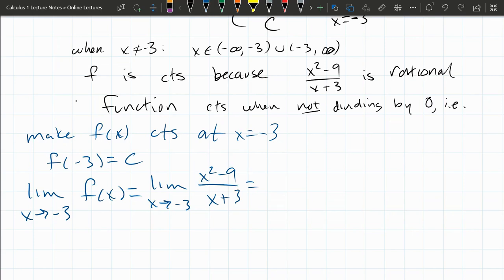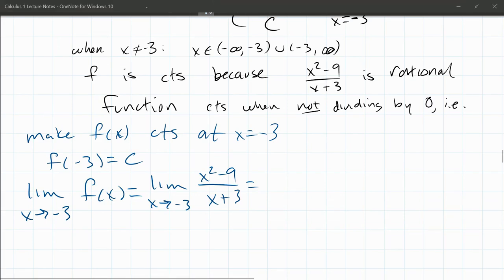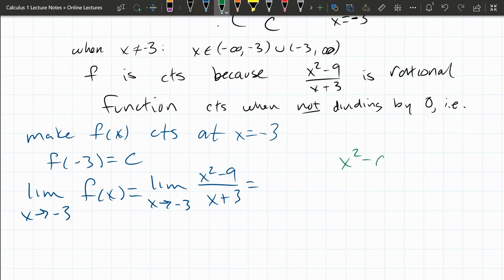Remember, this is difference of squares. And if you don't recall that algebra, if you have x squared minus a squared, this is x minus a times x plus a, difference of squares or conjugate factoring. This is equal to the limit as x approaches negative 3 of x minus 3 times x plus 3 divided by x plus 3. Now we can cancel these two here.